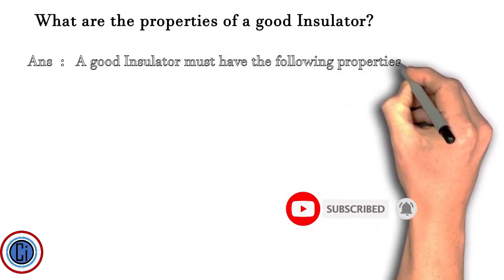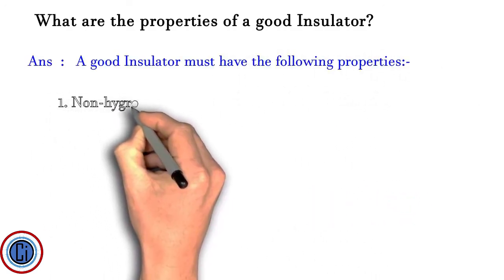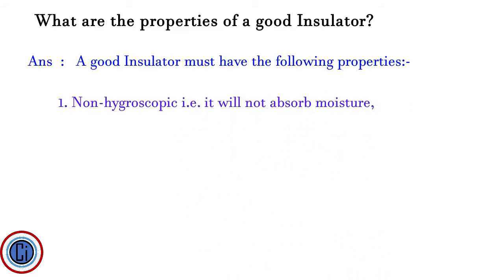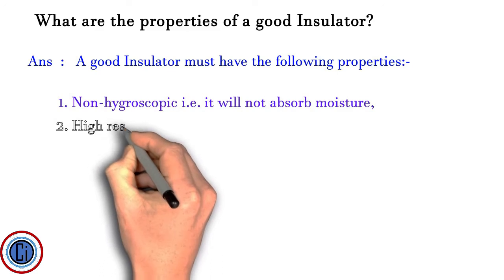What are the properties of a good insulator? A good insulator must have the following properties: 1. Non-hygroscopic, i.e. it will not absorb moisture. 2. High resistance to corrosion.